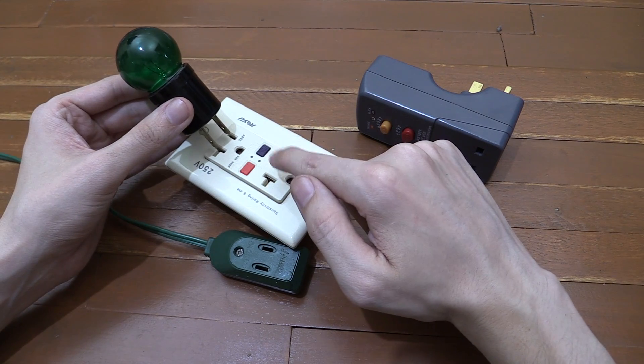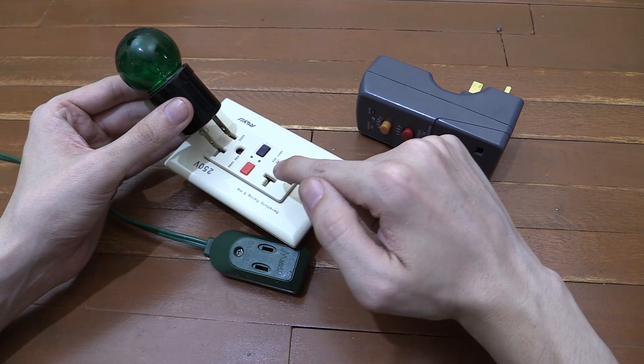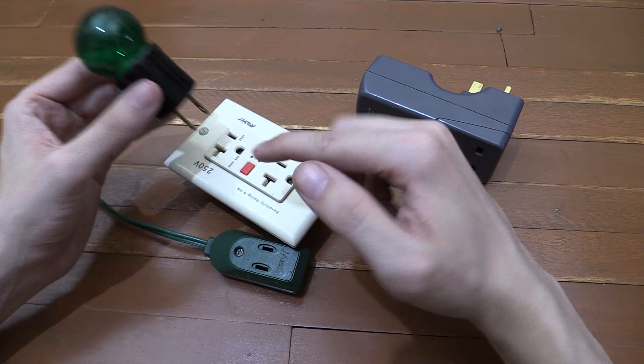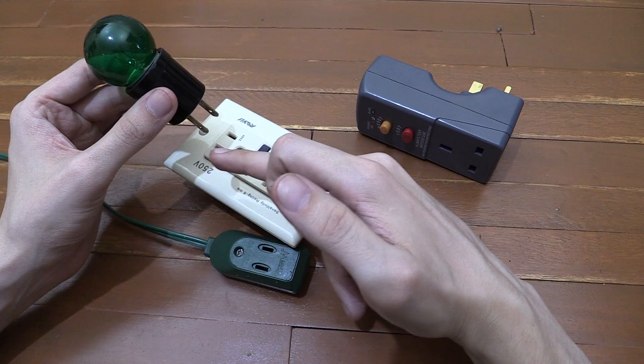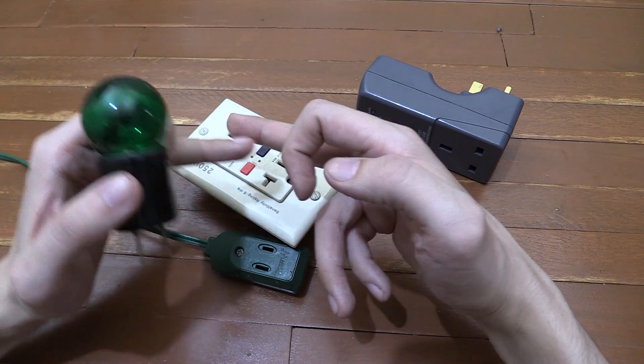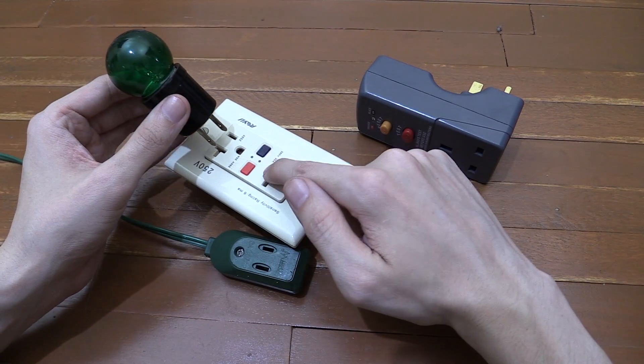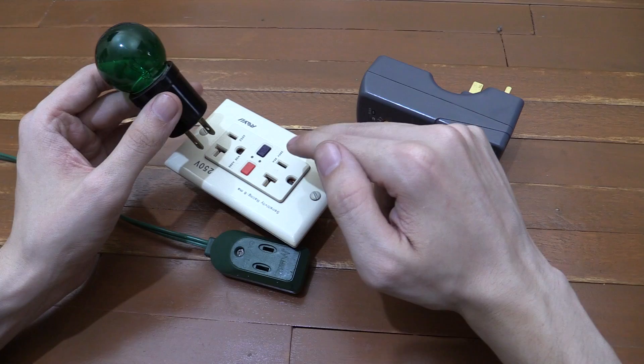So the way these work is they measure the current going out of the live and coming back to the neutral. If they don't match, they know that there's a fault somewhere, for instance you're touching it and the electricity is going through you to ground. So as soon as they sense that imbalance, they cut off the power immediately.